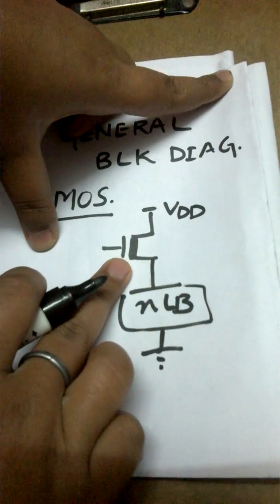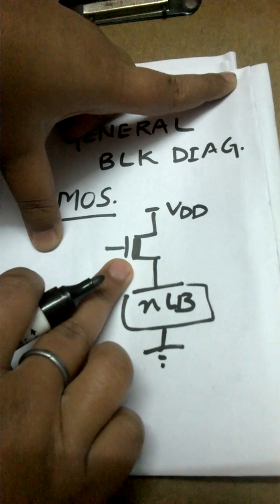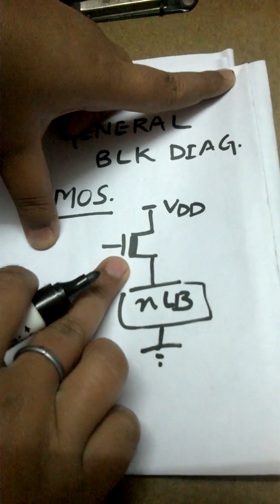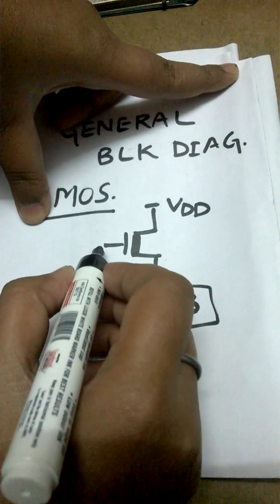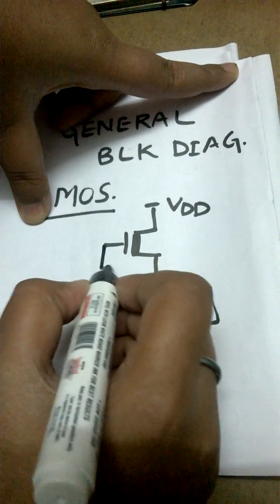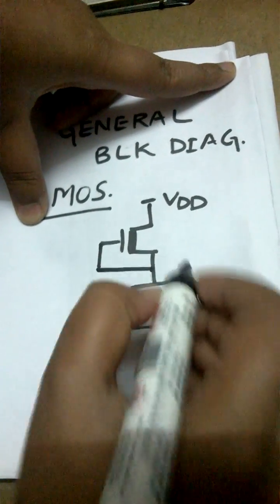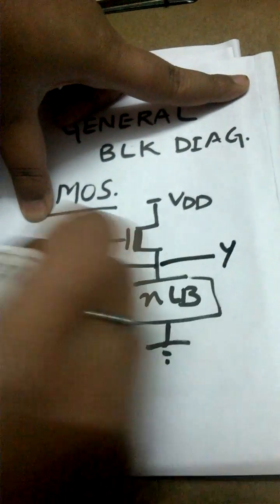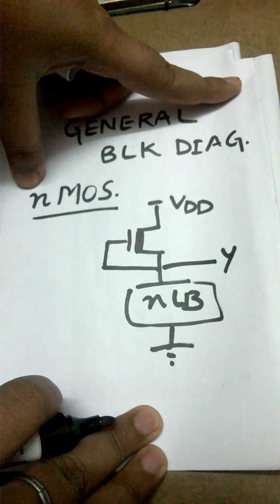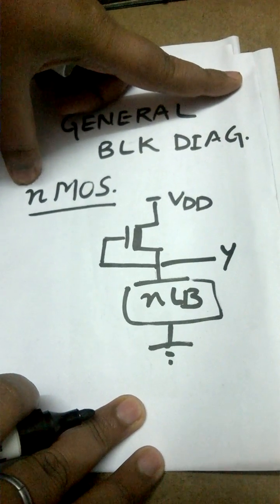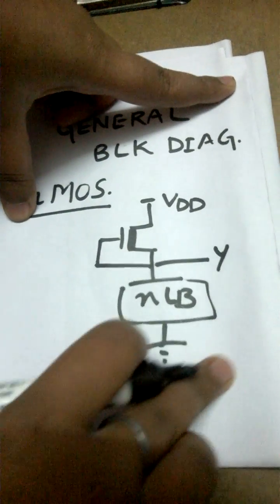And this is representing an NMOS device that is the depletion type NMOS. The dark line here shows that it is a depletion type NMOS, and we have to short this over here. Output can be taken from this point. So for any digital system to be designed using NMOS devices, this is the basic structure.